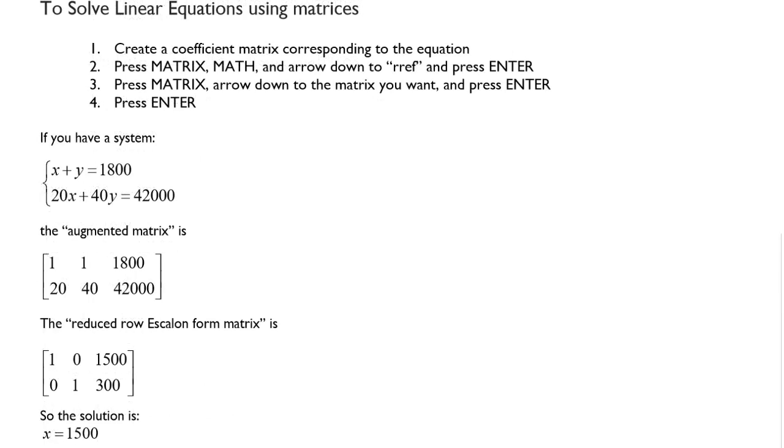We have a system of equations x + y = 1800, and 20x + 40y = 42,000. If we wanted to create the augmented matrix, we assume that the third column is on the other side of the equals sign, and we call that an augmented matrix.